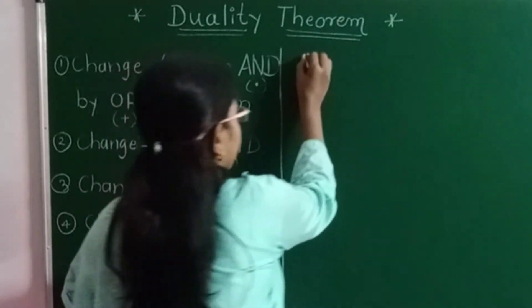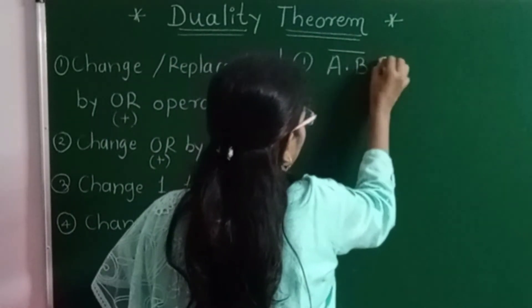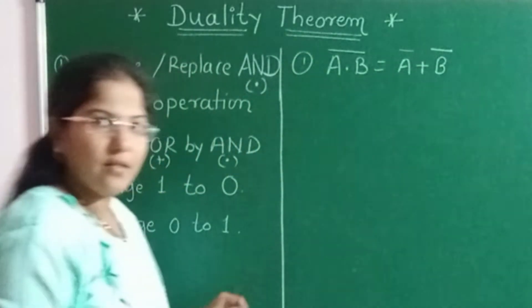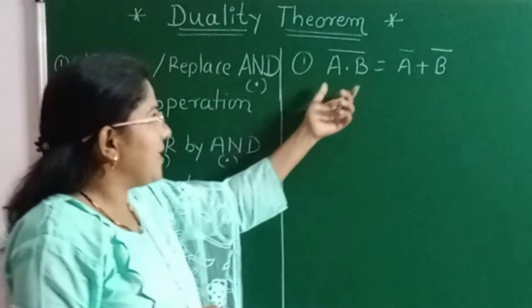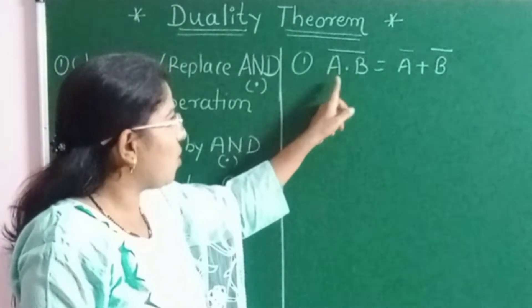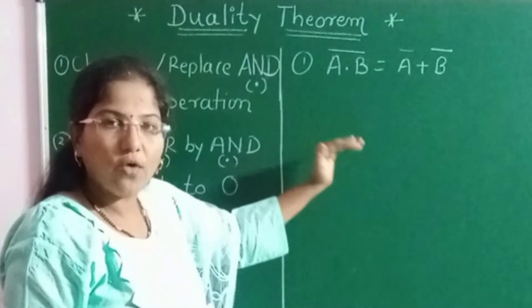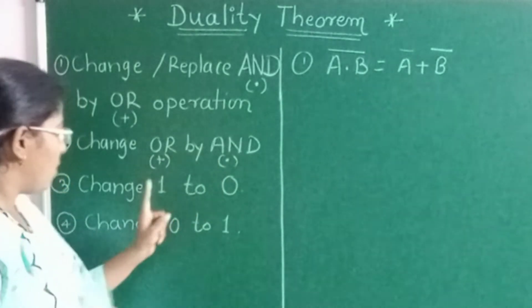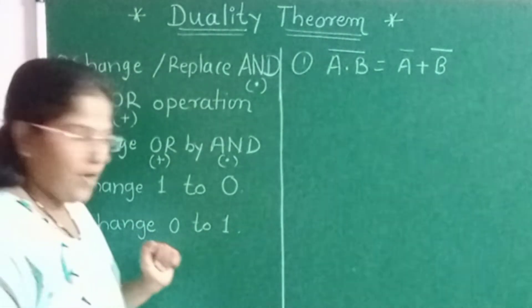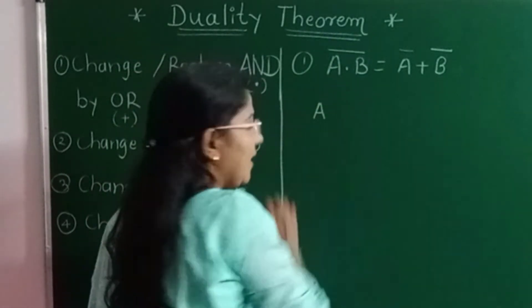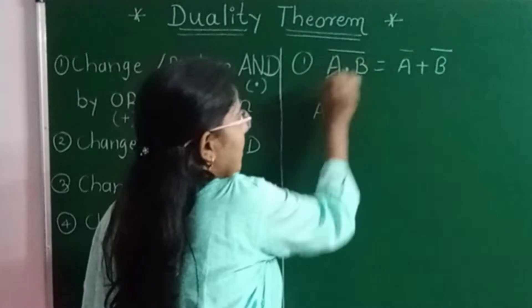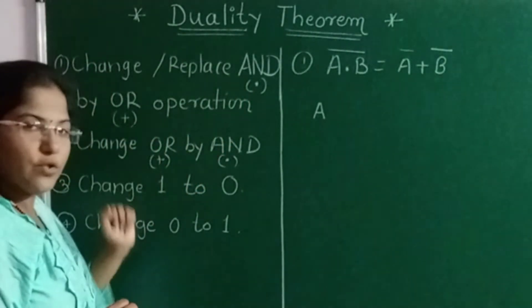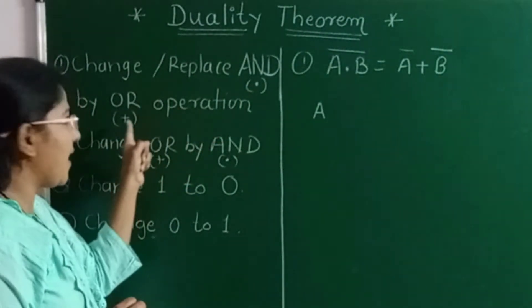Suppose the first Boolean expression is A·B (whole bar) = Ā + B̄. Whenever we write the dual of any given expression, we have to write all the variables as they are. We change only AND to OR (or OR to AND), 1 to 0, and 0 to 1. So I write the first variable A as it is. Now a dot (AND operator) is there, so we have to change that AND operator to OR.